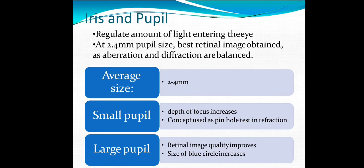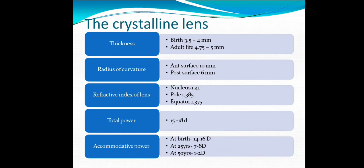Small pupil: depth of focus increases. This concept is used in pinhole testing refraction. Large pupil: retinal image quality improves, but size of blur circle increases.